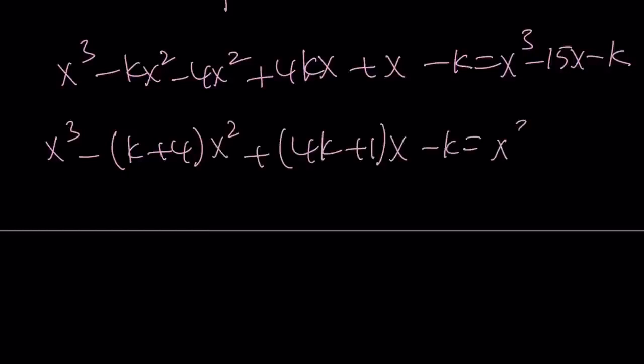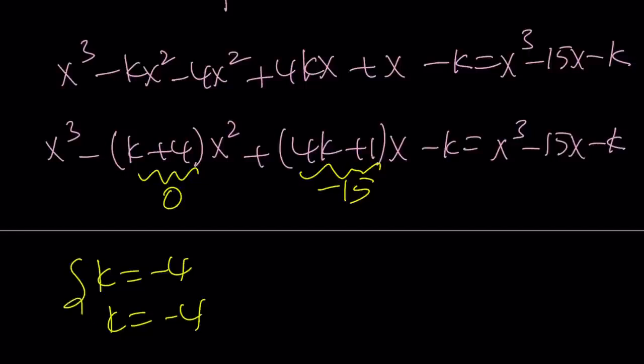And now we have an equality that's true for all values of x. But this implies that this number here must be 0 because there's no x squared on the right-hand side, and the coefficient of x is negative 15. So this gives us a system: k equals negative 4 and k equals negative 4, which means k equals negative 4. And we were looking for k, so the answer is negative 4. And this brings us to the end of this video.